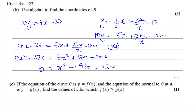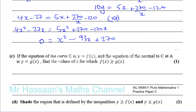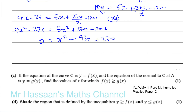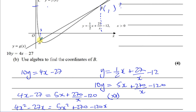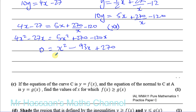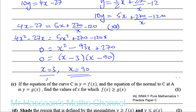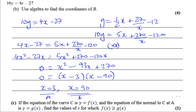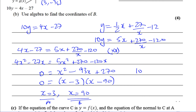We can factorize this because we know x equals 3 is one solution — the curve and normal intersect at A where x equals 3. So the factors are (x minus 3) and (x minus 90), since they multiply to give 270 and add to give minus 93. Therefore x equals 3 corresponds to A, and x equals 90 corresponds to B.